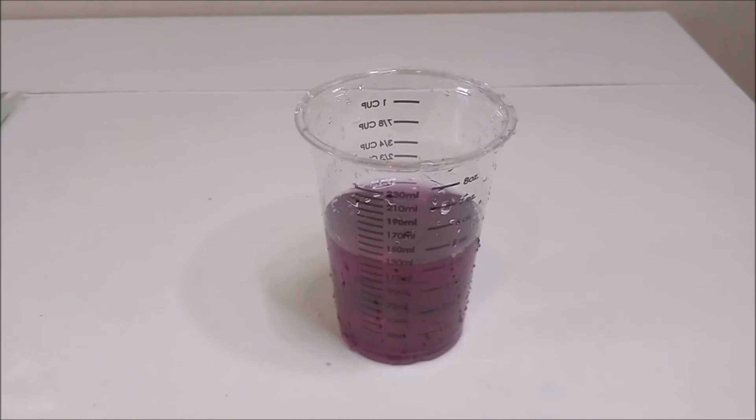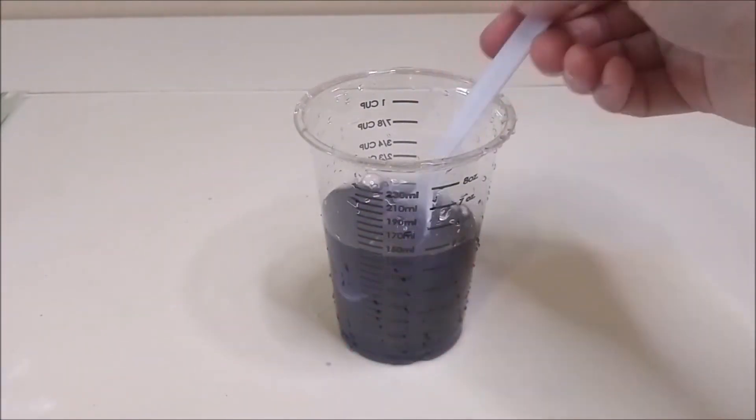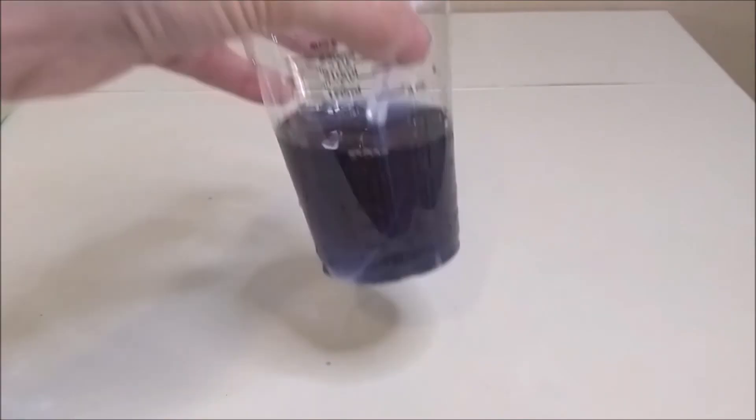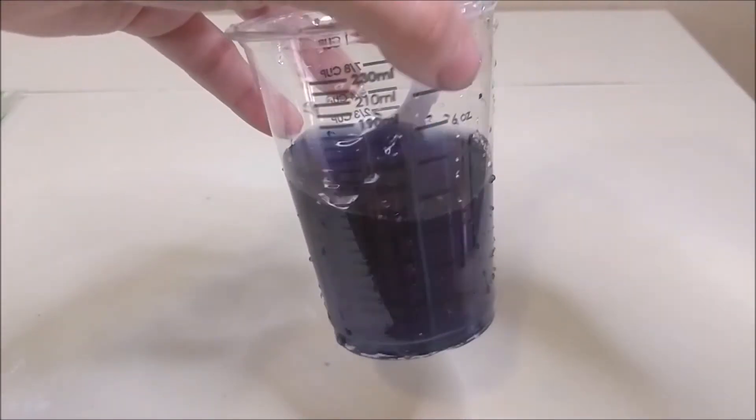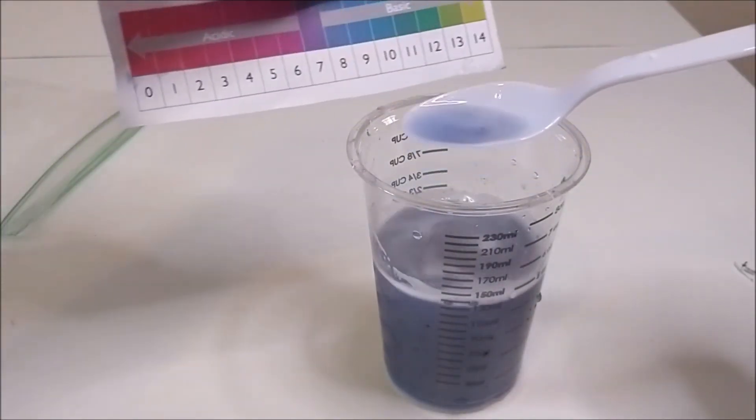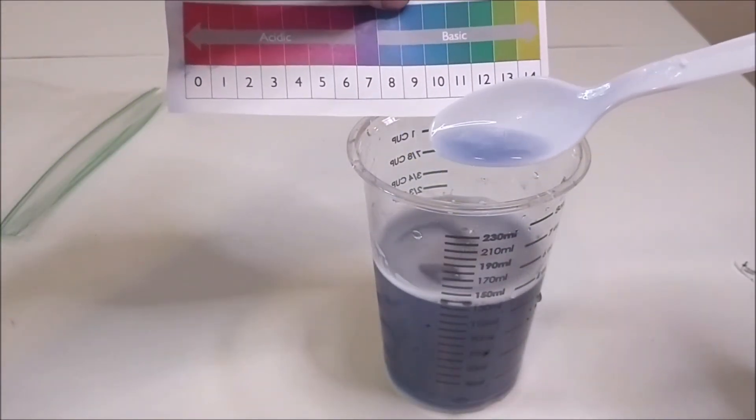We're going to stir in a big scoop of baking soda and then we're going to test the pH again. What do you think we'll see? So this step is really fun because you might see some bubbles or some foaming when you add the baking soda to the acidic solution.